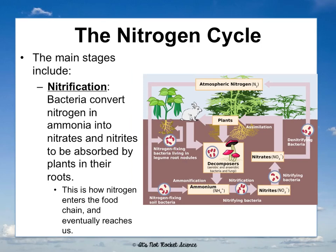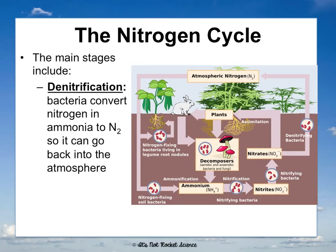Nitrification is when bacteria convert nitrogen and ammonia into nitrates and nitrites — NO3 and NO2 — so they can be absorbed by plants through their roots. This is usually the form in which nitrogen enters the food chain and eventually reaches us. Denitrification is when bacteria convert nitrogen, ammonia, nitrates, and nitrites back into N2 so it can return to the atmosphere.